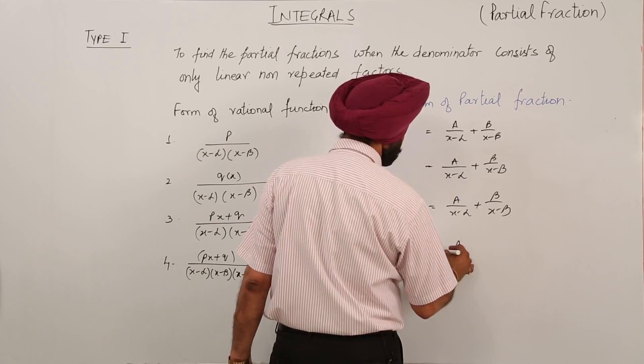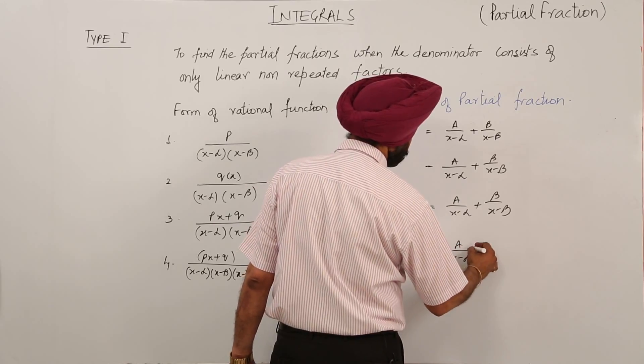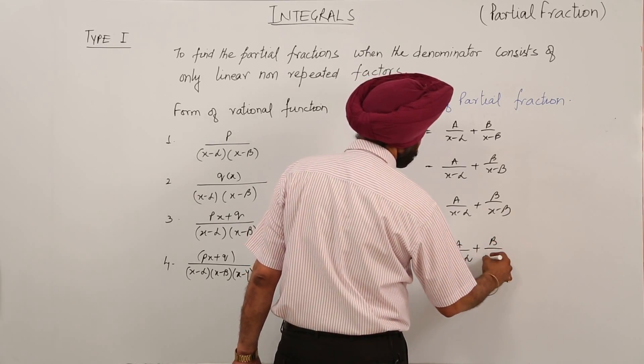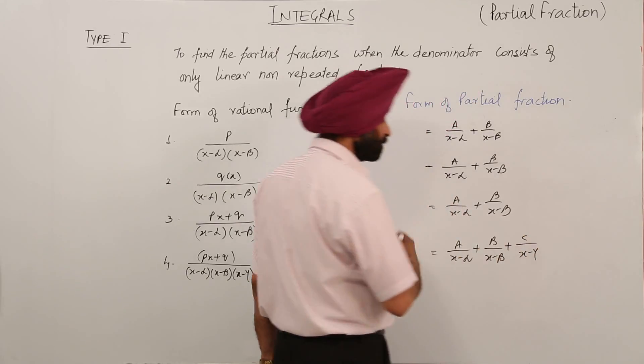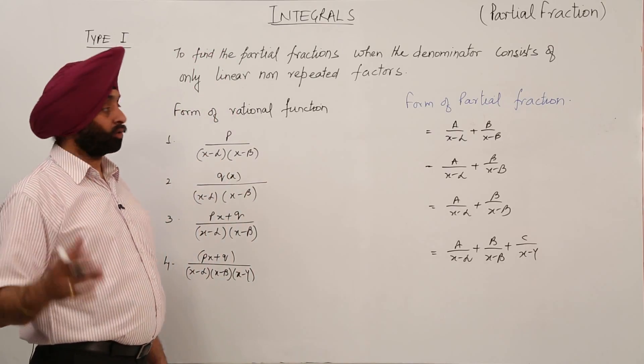And the last part can be written as A upon x minus alpha plus B upon x minus beta plus C upon x minus gamma and so on. And we can continue like this.